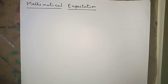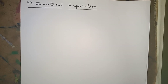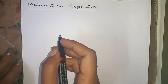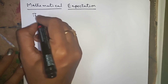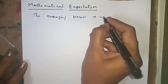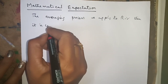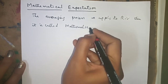Hello everyone. Today I am going to explain mathematical expectation, or simply expectation, and moments — raw moments, central moments, and MGF. Mathematical expectation means the averaging process. When we apply this averaging process to a random variable, then it is called mathematical expectation.